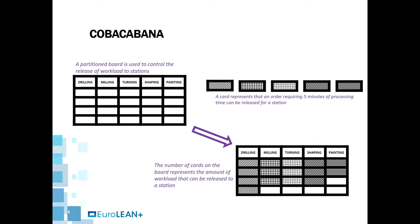In COBACABANA, cards are displayed on a planning board to monitor the workload at the workstations. Each card represents a fixed amount of workload, and in the example shown in this lecture, a card represents five minutes of processing time. So at any point in time, the number of cards available on the board for a workstation indicates the amount of workload that can be released to that workstation.